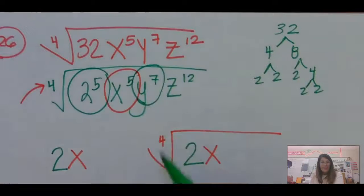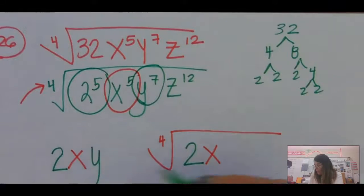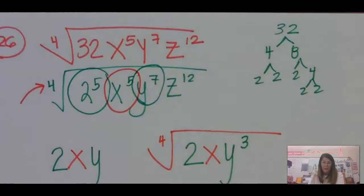Now let's talk about the y's. This is 7 fourths. So that's 1 and 3 fourths. So a whole y comes out, and there's 3 left over. We're short 1 to have them come out.